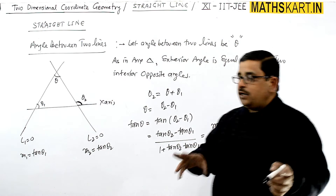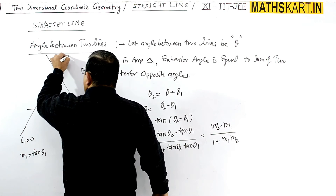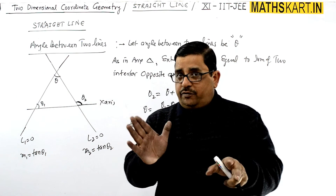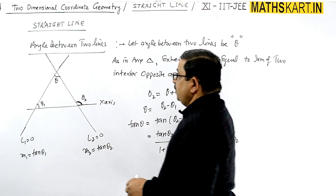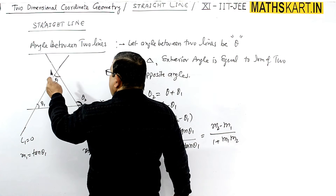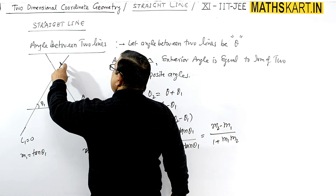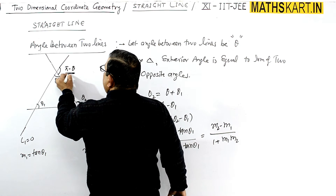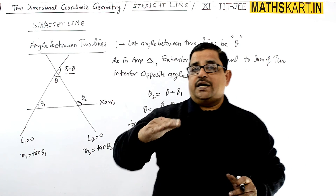Two lines form two angles — one acute and one obtuse. If one angle between the lines is θ, the other is π − θ (i.e., 180° − θ). So if θ = 60°, the other angle is 120°.